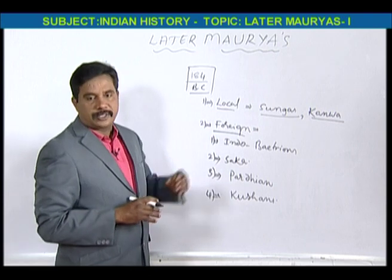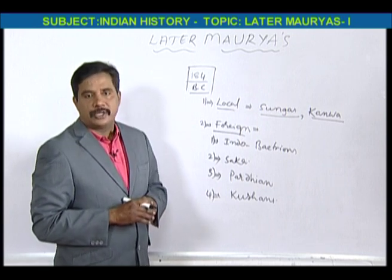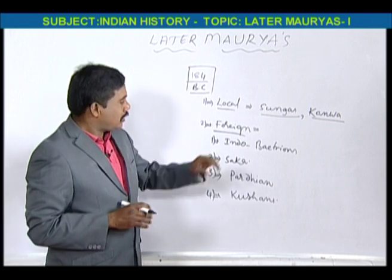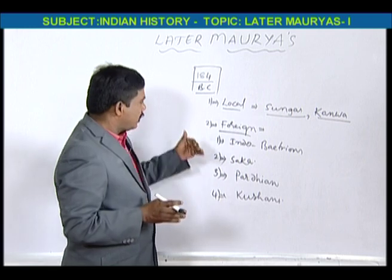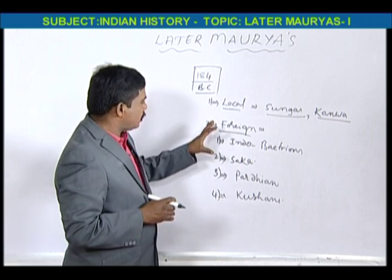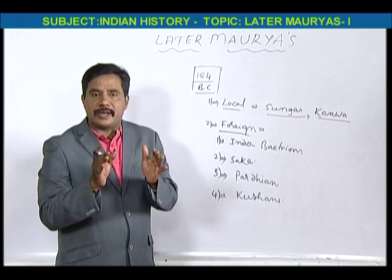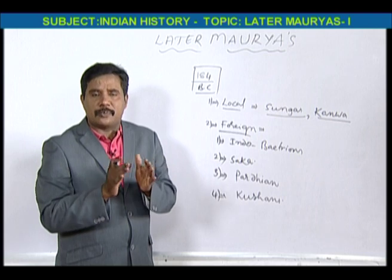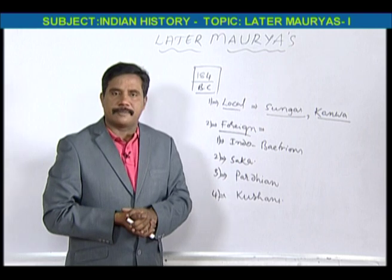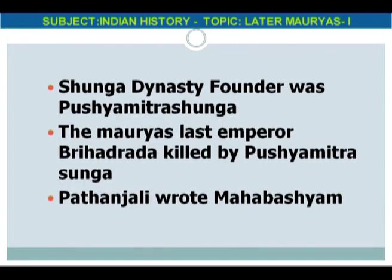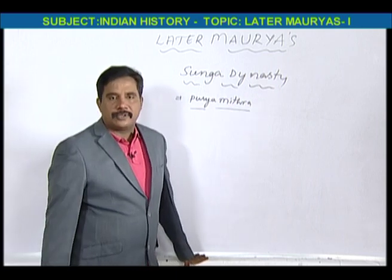First, Sungas. Who are the Sungas? The Sunga dynasty founder was Pushyamitra Sunga. He was the founder of the Sunga dynasty. Pushyamitra Sunga killed the last king of the Mauryas, that is Bruhadrada, and after killing Bruhadrada, he established the Sunga dynasty.